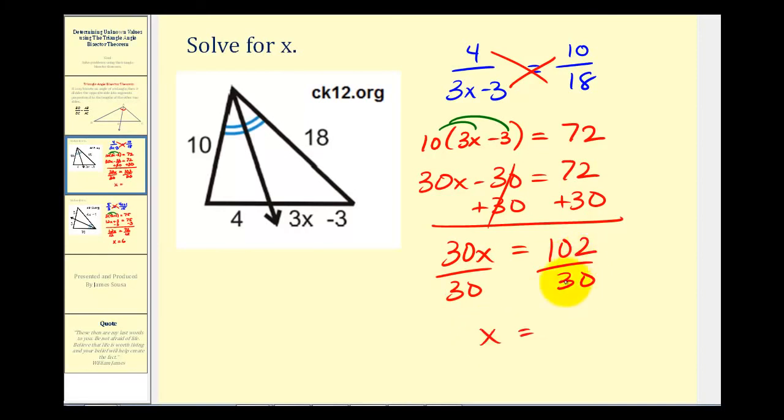Let's perform long division, 102 divided by 30. There are three 30's in 102, that would be 90. Subtract, that would be 12. So this gives us 3 and 12 thirtieths. And these both have a common factor of 6. There are two sixes in 12 and five sixes in 30. So X is equal to 3 and two fifths.